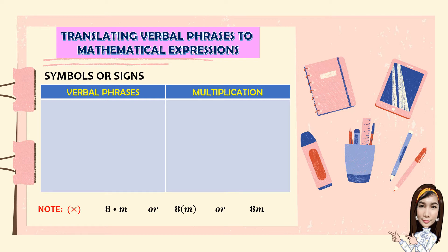We can express the idea of 8 times the number using the center dot or the parenthesis, or we can combine the two. If there is no operation indicated, it is understood that it is multiplication. So, for the verbal phrases, we have the product of B and 3, that is written as 3B.